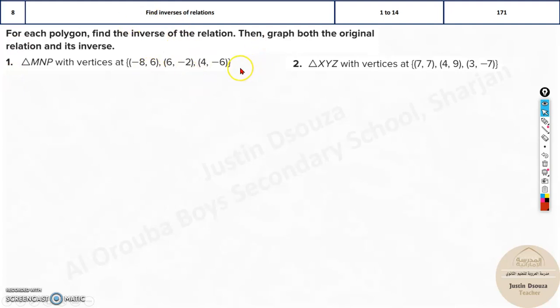We need to find the inverse of this. So basically, what is inverse before we start solving? Inverse is something that is opposite. If it is x and y, inverse would make it y and x. To find the answer, it's very simple. You just swap.